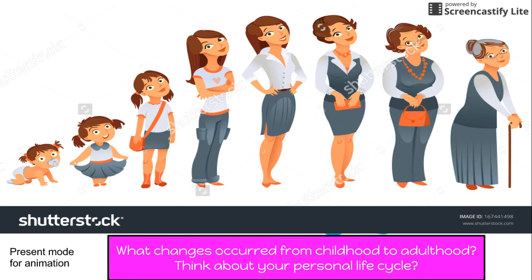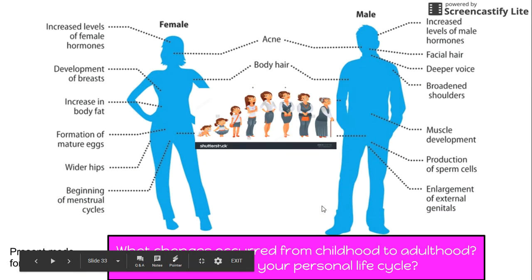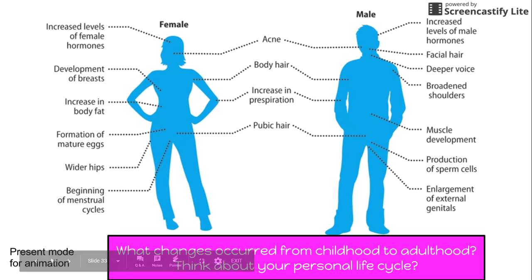Think about your personal life cycle. Some changes that occur in both males and females are acne, body hair, increase in perspiration, and pubic hair. Male changes include increased levels of male hormones, facial hair, deeper voice, broadened shoulders, muscle development, production of sperm, and enlargement of external genitals.